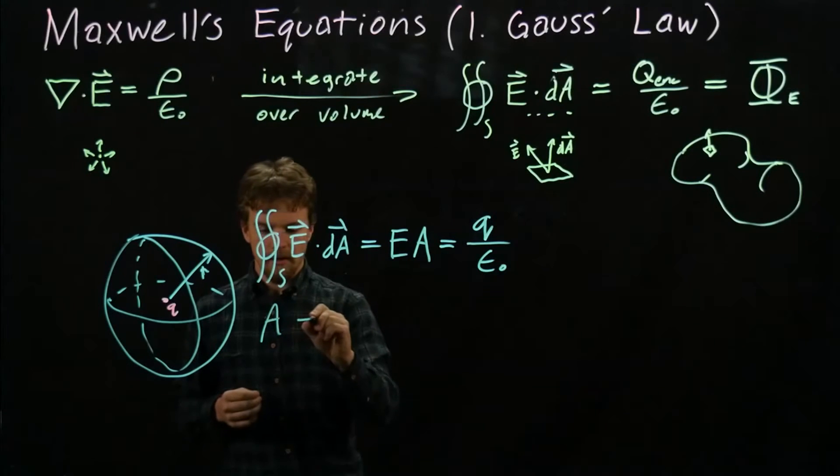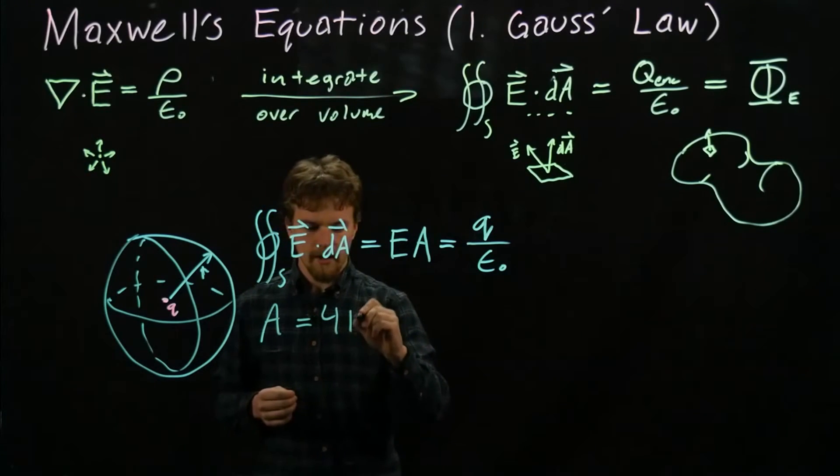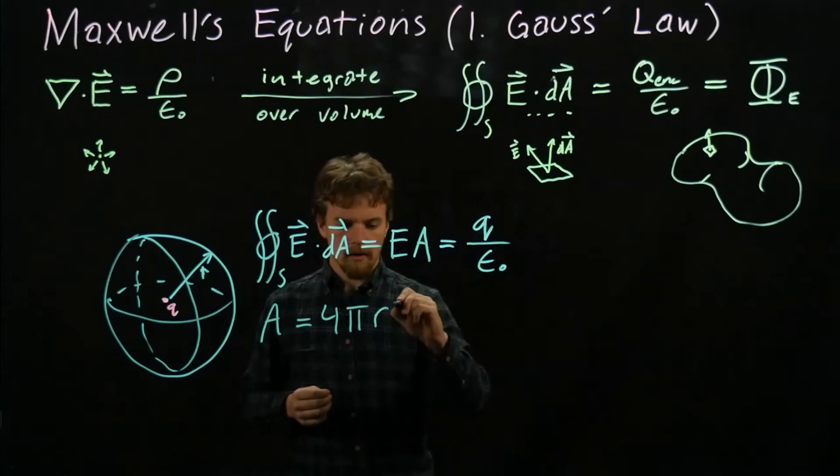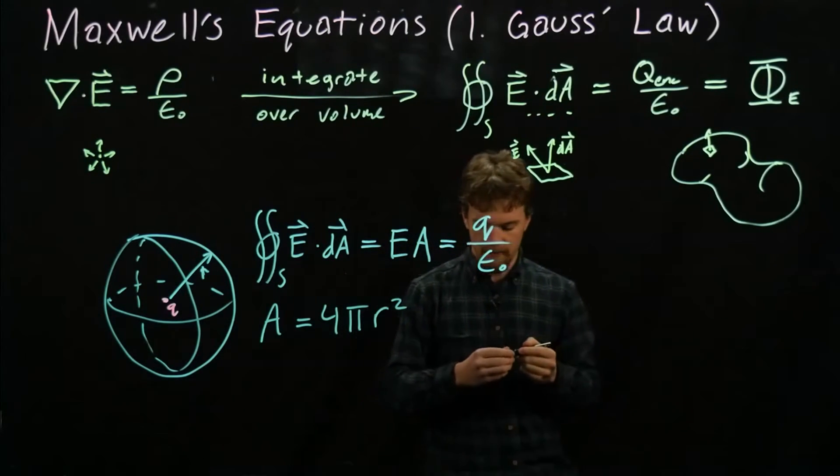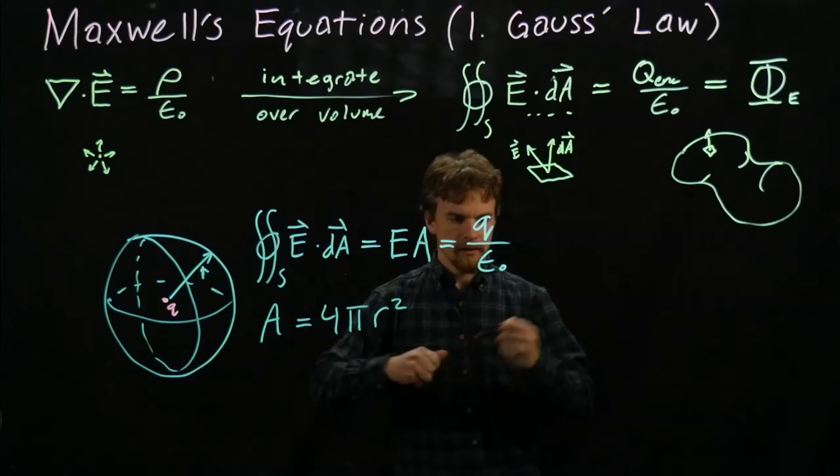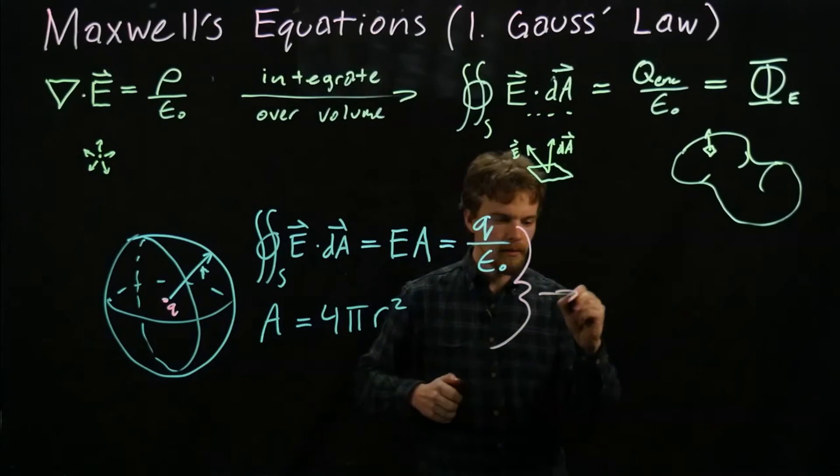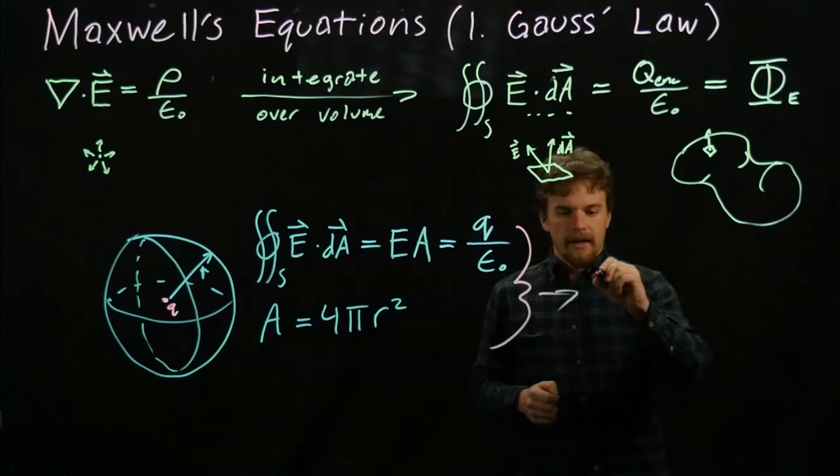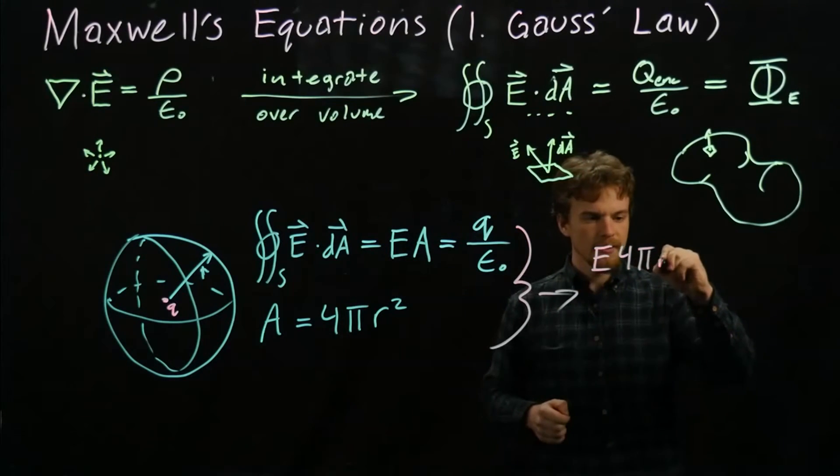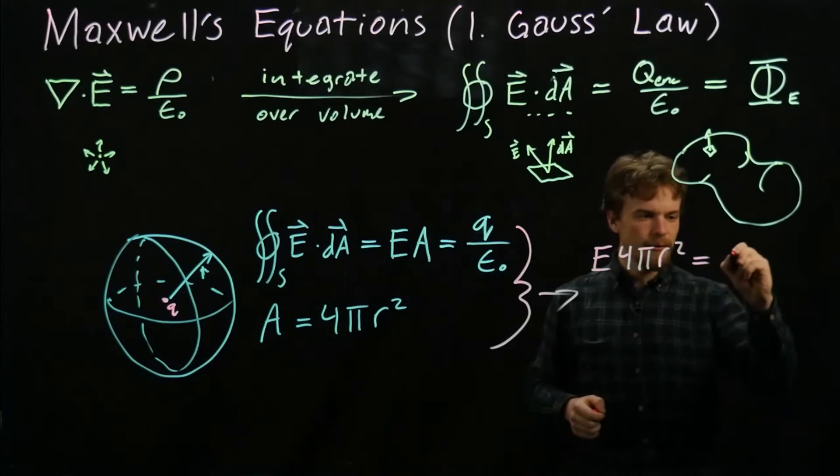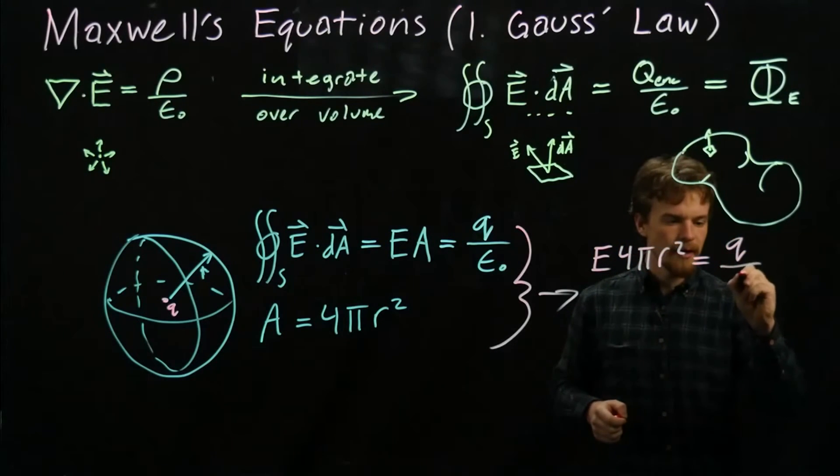We know from geometry the surface area of a sphere: A equals 4πr². So we can substitute that in here. What do we get when we do that?